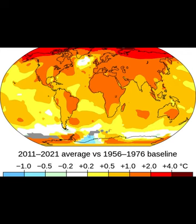Greenhouse gases trap heat, leading to a rise in global temperatures — a phenomenon known as global warming. The consequences of climate change are far-reaching and include rising sea levels: as global temperatures increase, polar ice melts, causing sea levels to rise, posing a significant threat to coastal communities and ecosystems. Climate change is also linked to an increase in the frequency and intensity of extreme weather events, such as hurricanes, heat waves, floods, and droughts.